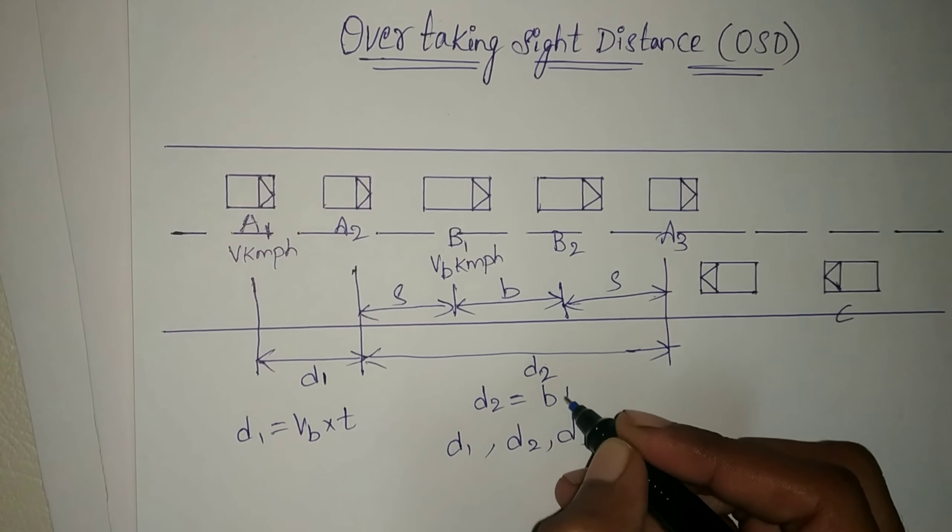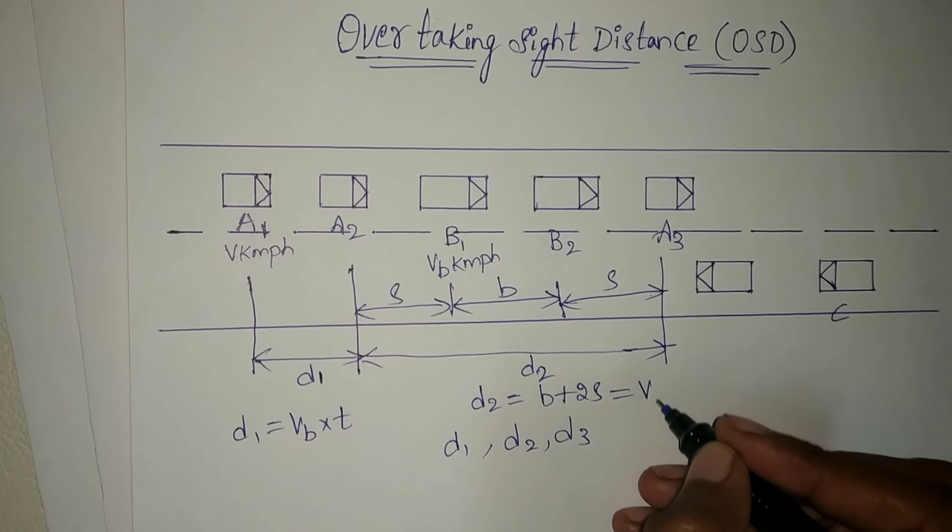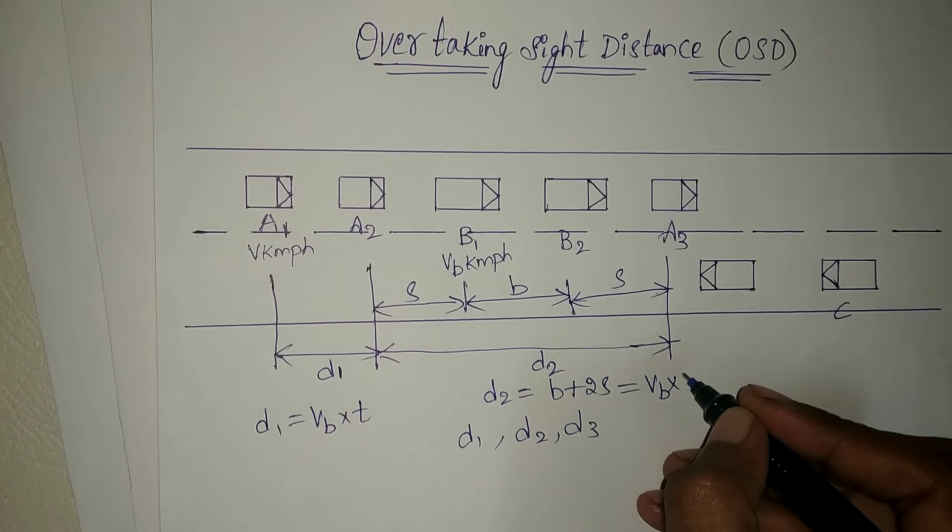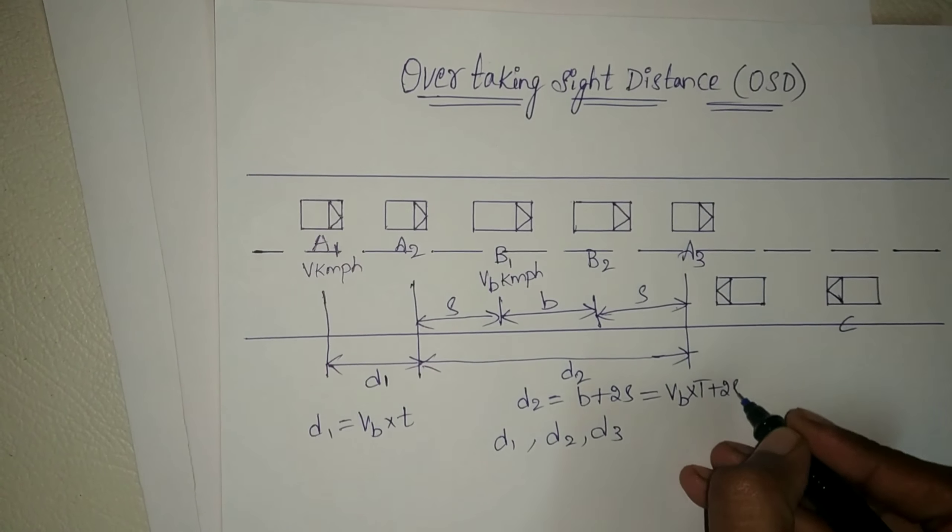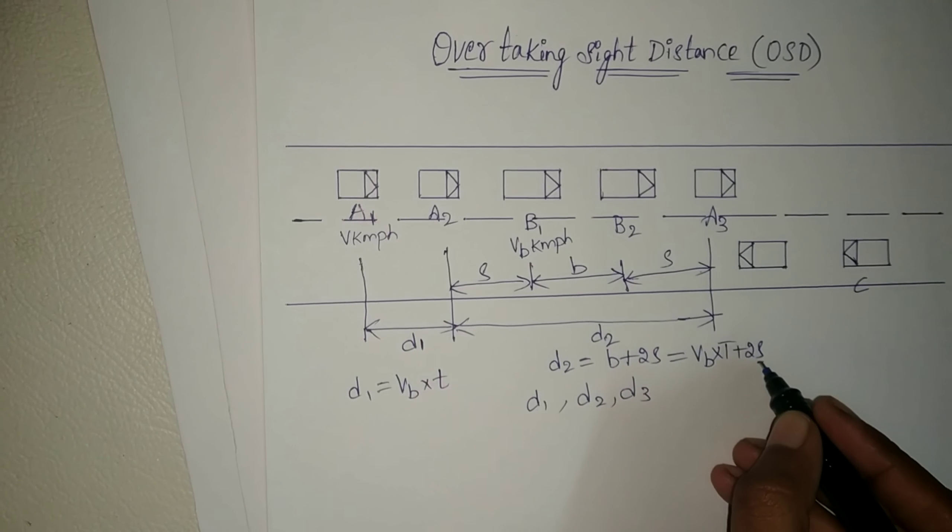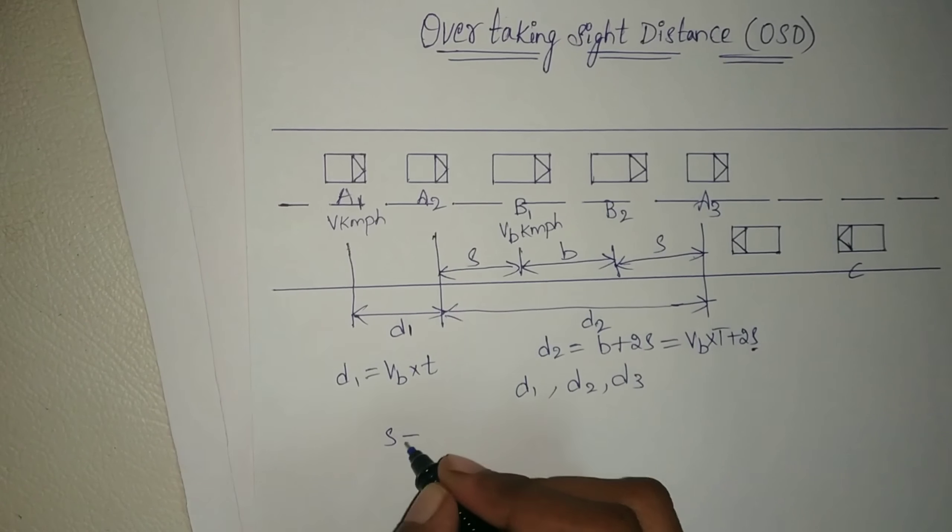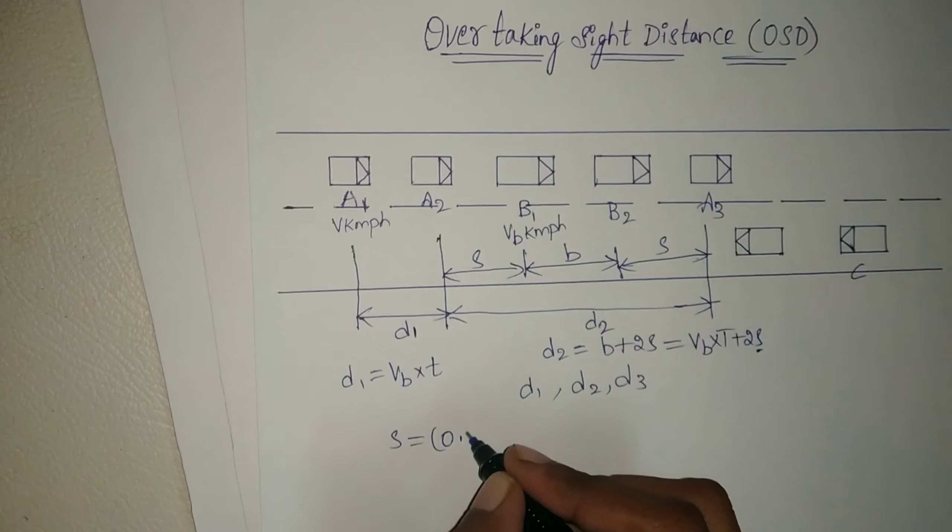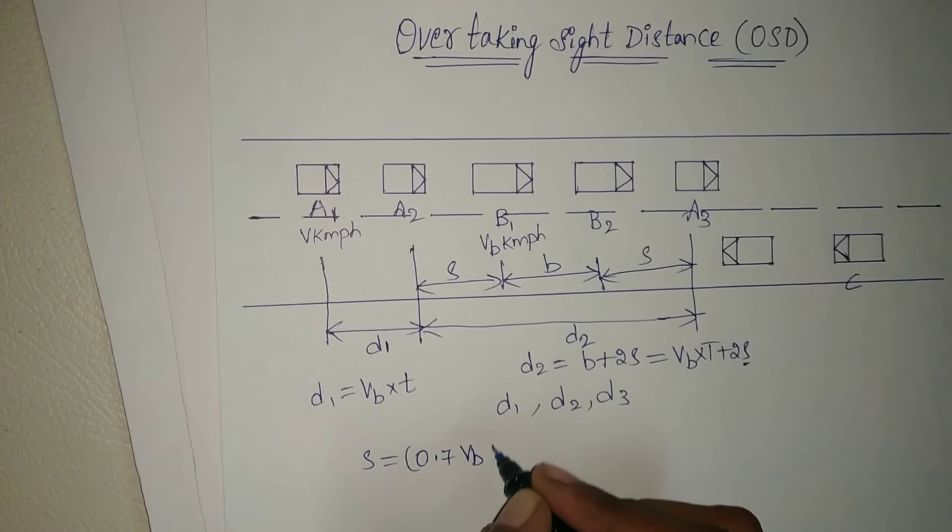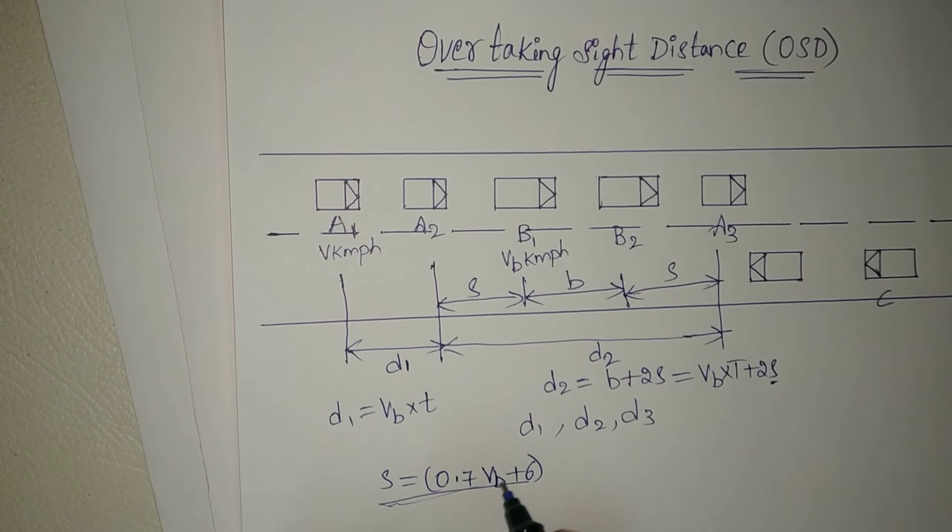Then d2 is equal to b plus 2s, that is Vb times t plus 2s, where s is the spacing between these vehicles. s is equal to 0.7Vb plus 6. This is an empirical formula.